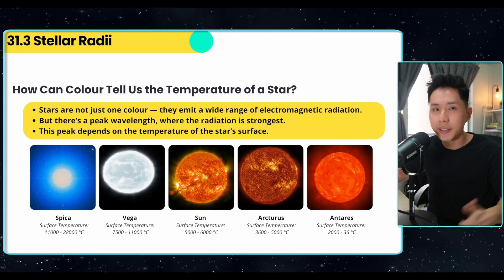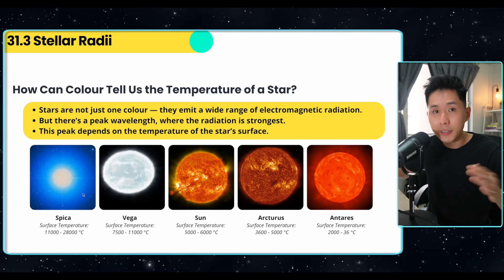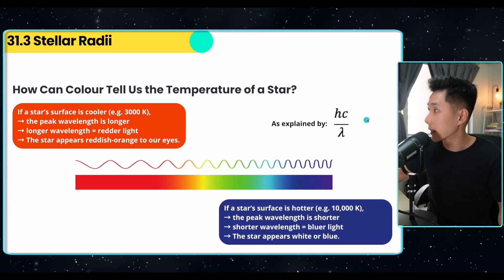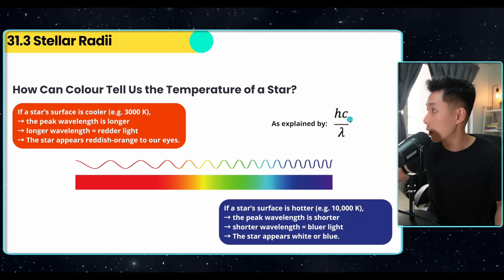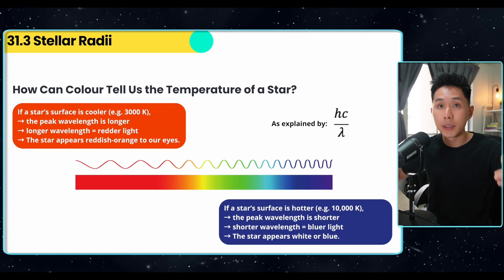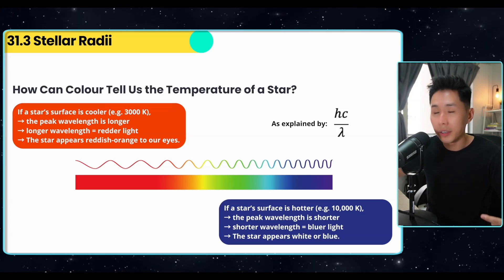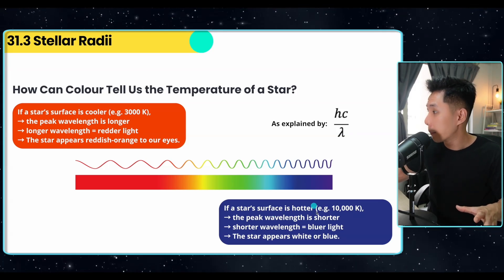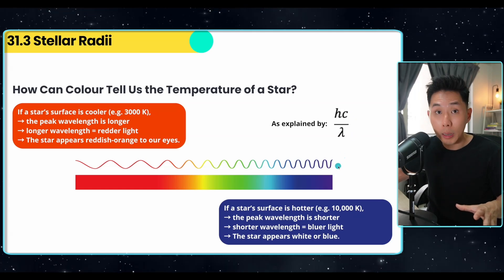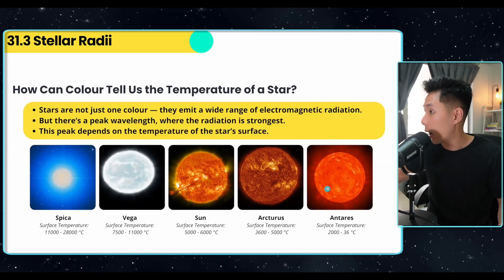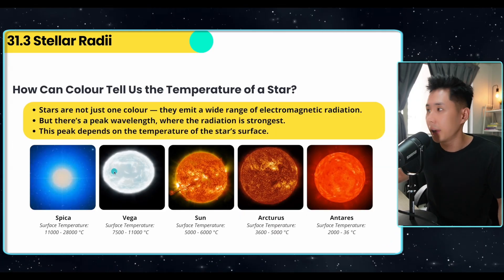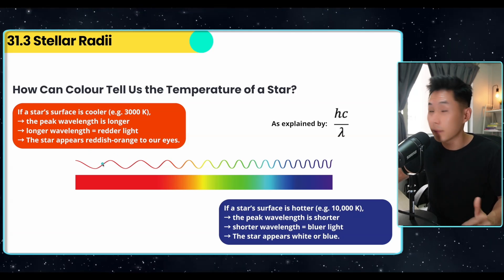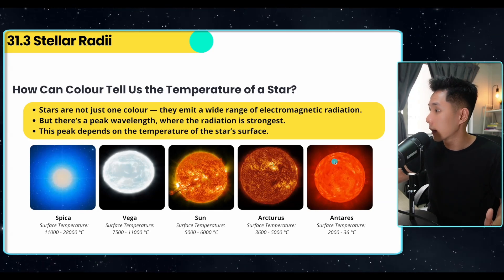Different stars have different surface temperatures, and as a result, the colors they show are also quite different. We know that the energy emitted by a star follows E = hc/λ. The higher the temperature, the more energy emitted, and as a result the wavelength is shorter. This is why if a star's surface is hotter, the peak wavelength will be shorter — shorter wavelength means blue color, so the star appears white or blue when surface temperature is very high. If the star's surface is cooler, the peak wavelength is longer, meaning orange and red colors.